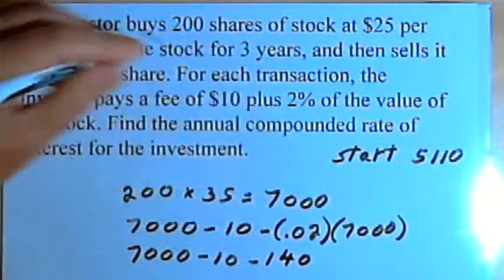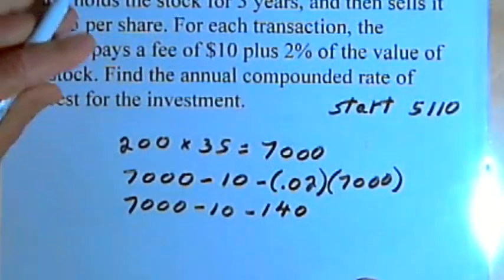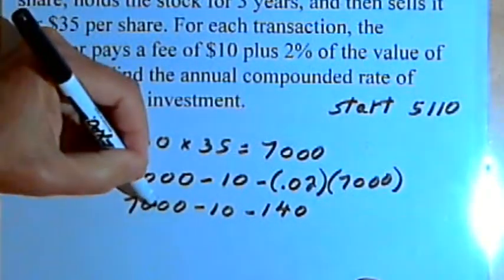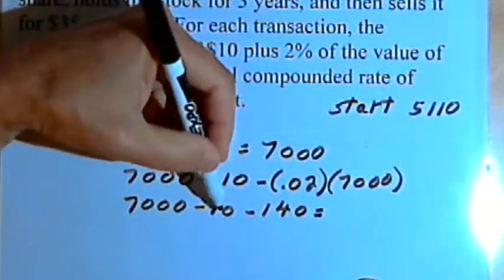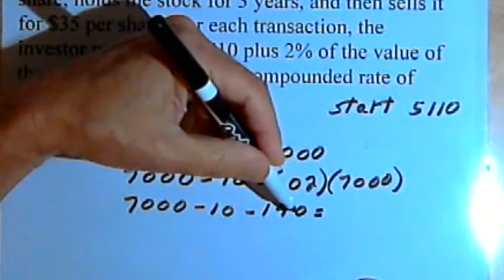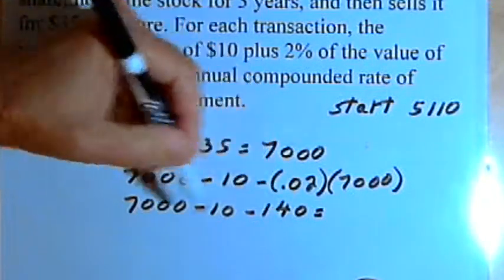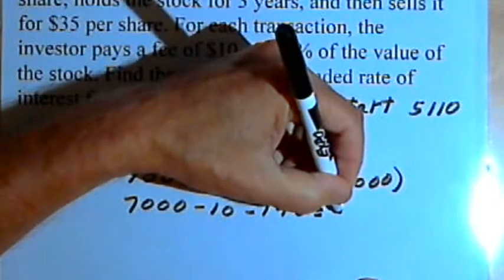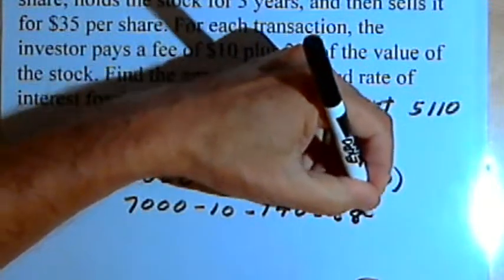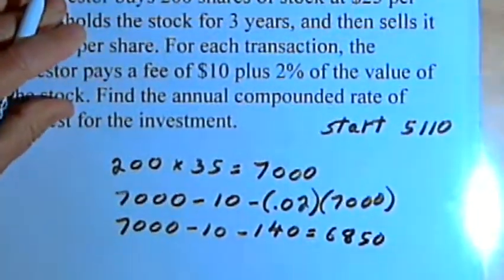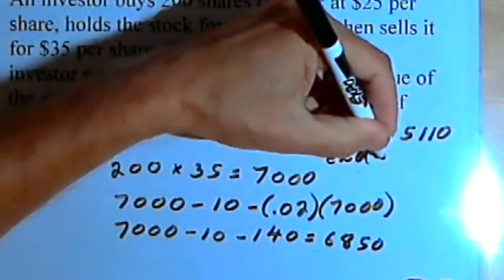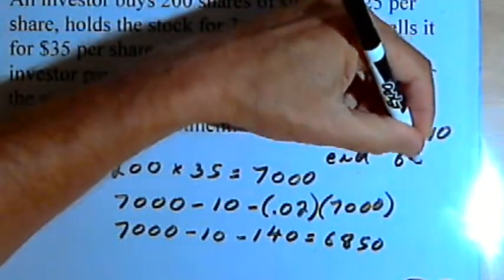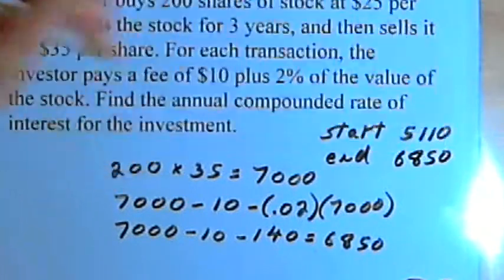So that's $7,000 minus $10 minus 0.02 times $7,000, so that's minus $140. Let's subtract this. $10 and $140 are $150, and $7,000 minus $150 is $6,850. So at the end of the problem, at the end of three years, he has $6,850.